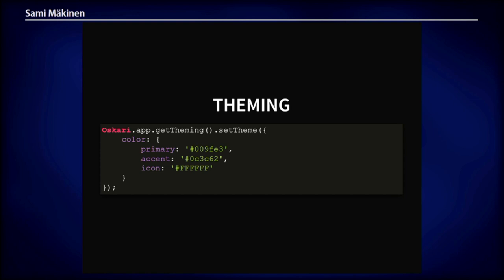Next up: theming. As initial progress, we want to have a JSON representation of the theme so we can save it to the database, and for any embedded maps that users create, they could have a custom theme for their embedded maps.